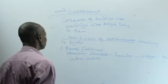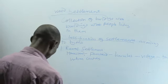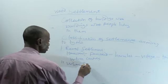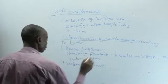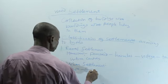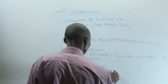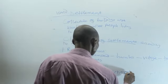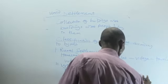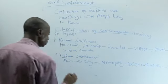That is classification of settlement according to type. Then we have urban settlements. Under urban settlement, we have town, which leads to city, and the city leads to metropolis. Metropolis leads to conurbation, and conurbation leads to megalopolis.